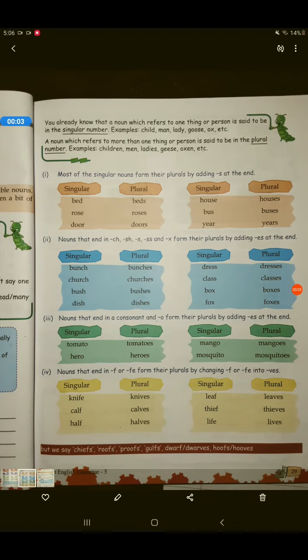The next way of making a plural is the noun that end in CH, SH, S double S and X form their plurals by adding ES at the end. उसमें आप suffix लगाओगे ES, ठीक है? For example, bunch, bunches, CH में end किया, तो bunches, ठीक है?